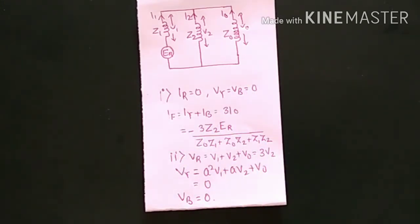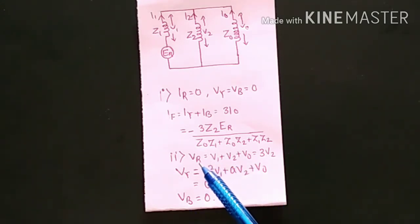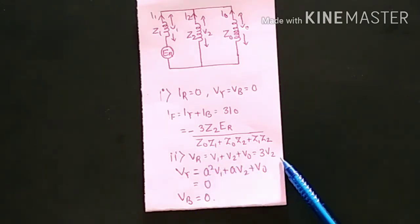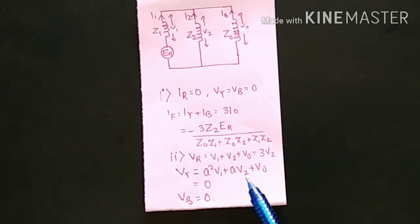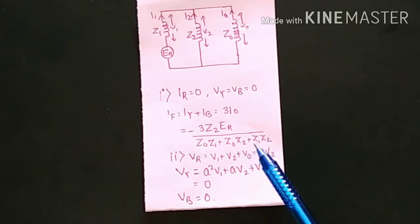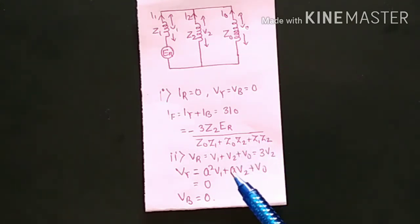An important result in double line to ground fault is VR = 3V2, and VY = VB = 0. In my videos I have covered the single line to ground derivation, line to line derivation, and double line to ground derivation — you can see them in the playlist on unsymmetrical faults.